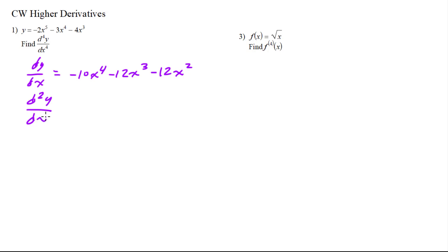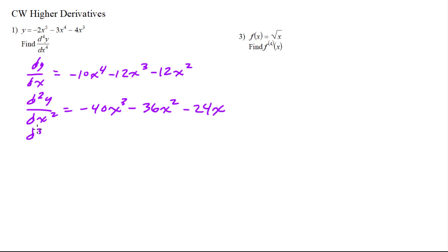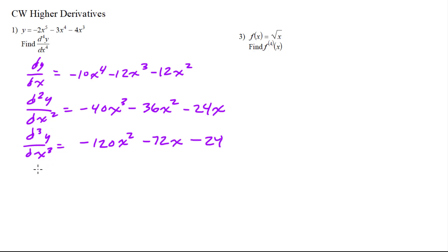The second derivative is just the derivative of the first, which would be negative 40x cubed minus 36x squared minus 24x. Then the third derivative would be negative 120x squared minus 72x minus 24. And finally the fourth derivative would be negative 240x minus 72.